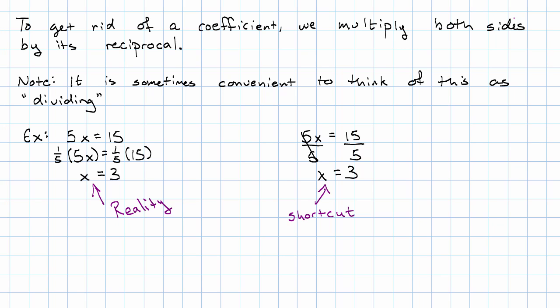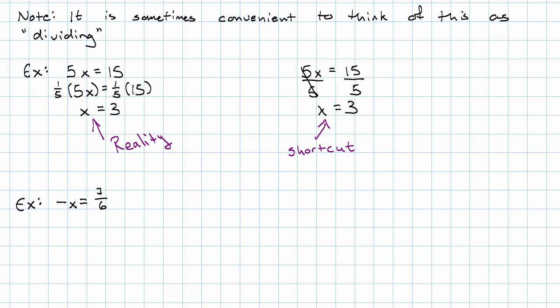There's one more tricky situation that we might find ourselves in, where we have an equation where we're just told what the value of the opposite of x is. And we need to remember that we should think of a negative sign in front of x as a coefficient negative 1. Now the reciprocal of negative 1 is just, well, it's 1 over negative 1, but that's just negative 1 again. Really, what we're going to do is multiply both sides by negative 1, which just has the effect of taking the opposite of both sides. If the opposite of x is positive 7 sixths, then x itself must be negative 7 sixths.